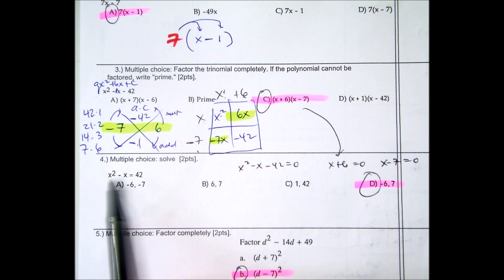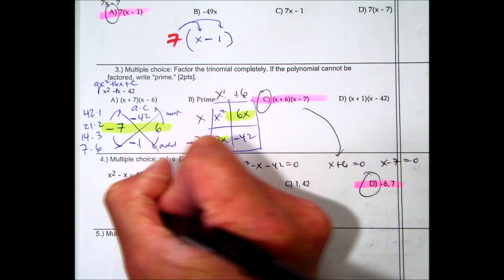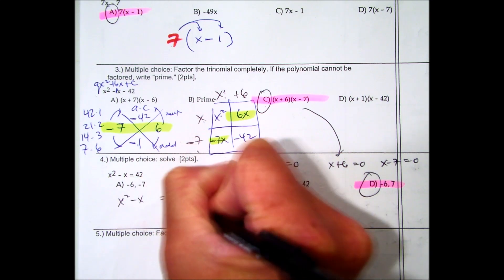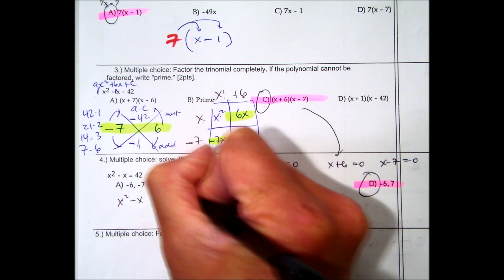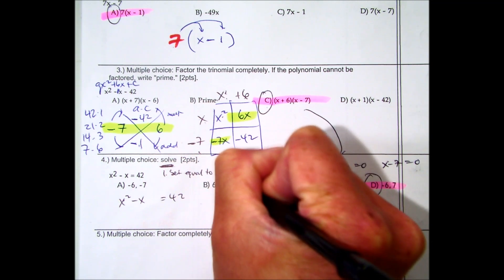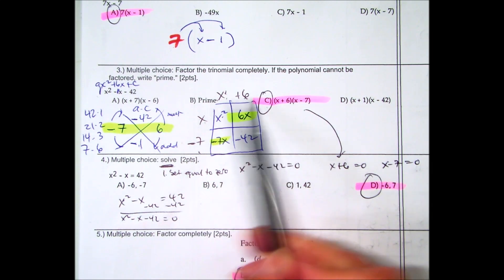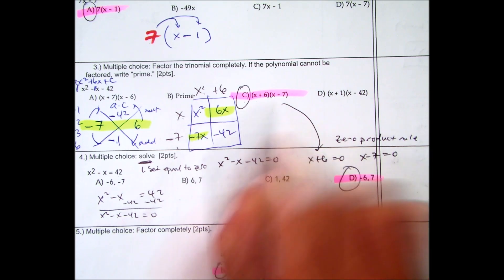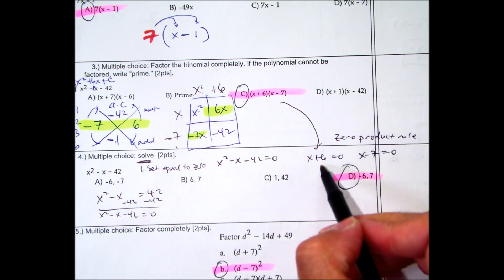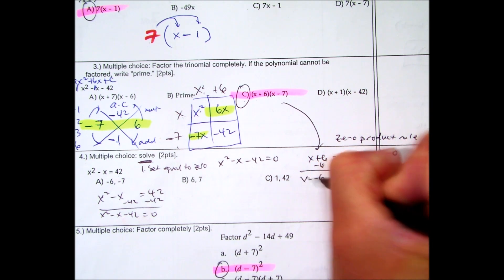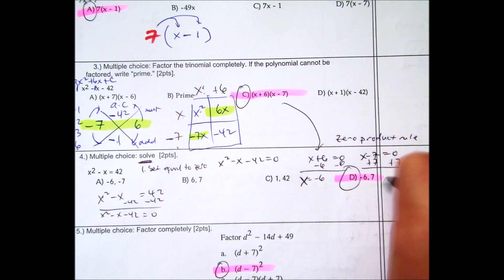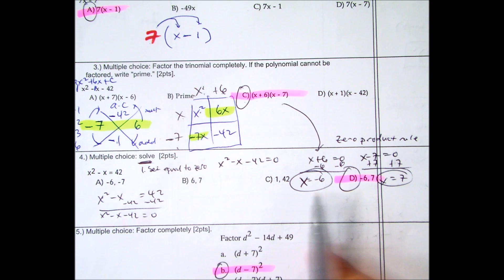Question number 4: x² minus x equals 42. To solve, set equal to 0 for quadratics — subtract 42 to get x² − x − 42 = 0. That's essentially the same problem as above. Take your two binomials and set them equal to 0 — this is called the zero product rule. It essentially states that one of these expressions has to equal 0. Subtract 6 here and you get x equals negative 6; add 7 over here and you get x equals 7. Those two solutions are choice D.